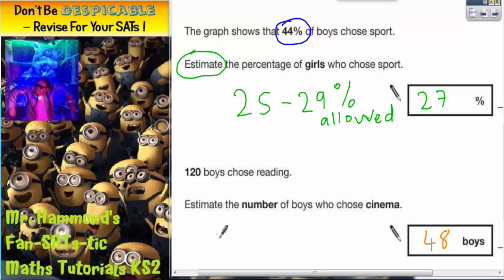A quick check on the mark scheme shows that actually we could have had any answer from 44 to 52 boys. So, our estimate of 48 is actually right in between those two answers. You could have had anything from 44 to 52 boys.